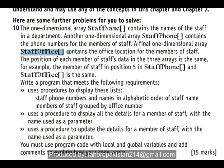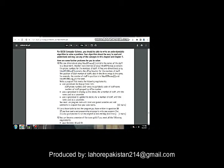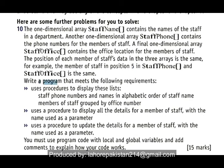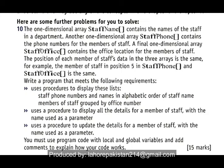The staff offices array should contain the location of the office of each staff member. The position of each member's data in the array is the same — for example, if the position of a staff member is 5, his phone number will also be at position 5 and his office location will also be at position 5. We are supposed to write a program using procedures which should display the list of staff member names, their offices, and their phone numbers.